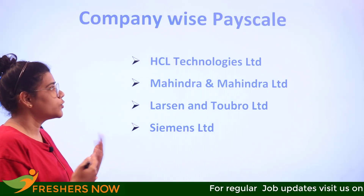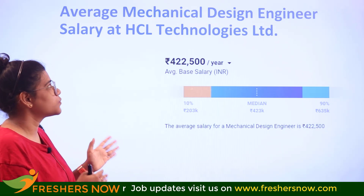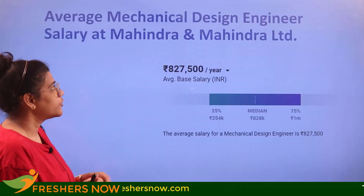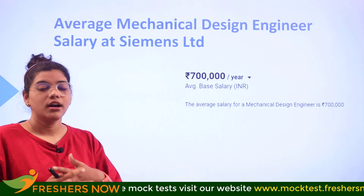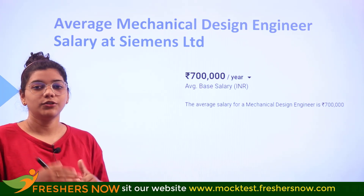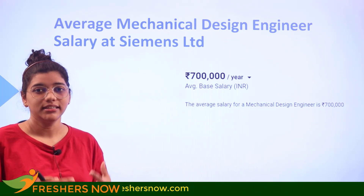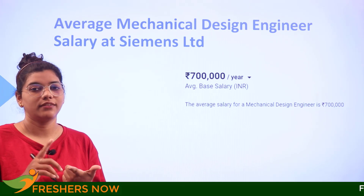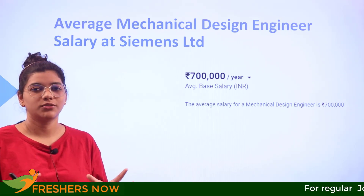Company-wise salaries for a mechanical design engineer include HCL at 4 lakhs 22,000, Mahindra at 8 lakhs 27,000, Larsen & Toubro at 5 lakhs 49,000, and Siemens at 7 lakhs per annum. The differences depend on the company, organization, and location. Additionally, the skills you have, your work exposure, practical experience, and other capabilities are all taken into consideration when determining salary.